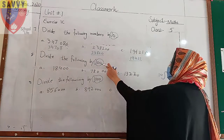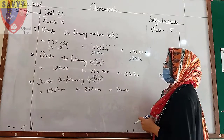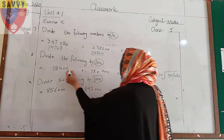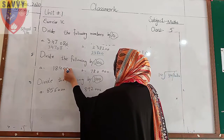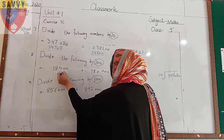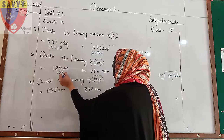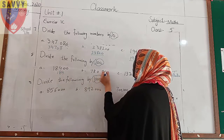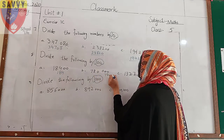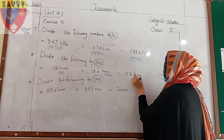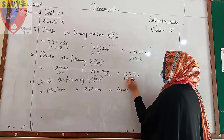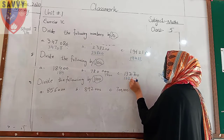Now here we divide by 100. How many zeros does 100 have? It has 2 zeros. So you remove 2 zeros from the number. For example: 142, 780, 0, 0, 1, 327 — working through each number, you remove 2 zeros to get your answer.